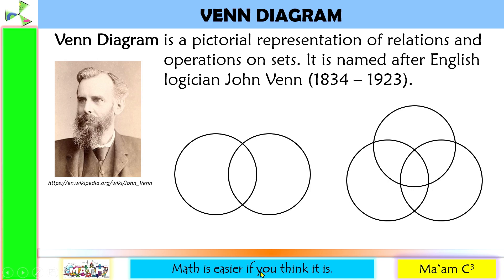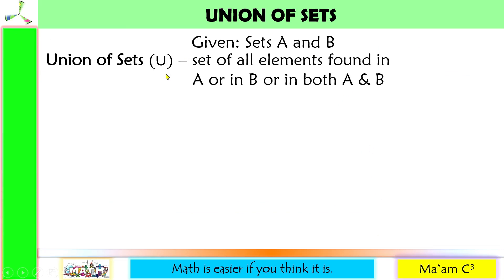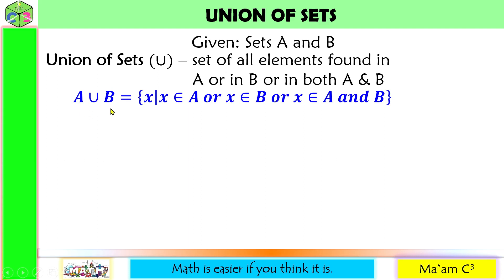The first set relationship that we are going to discuss is the union of sets. Given sets A and B, union of sets, denoted by this symbol, is the set of all elements found in set A or in set B or in both A and B. The set builder notation is: A union B is the set of all X such that X is an element of A, or X is an element of B, or X is an element of both A and B. The Venn diagram for union of sets is this one.